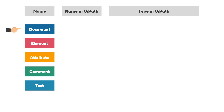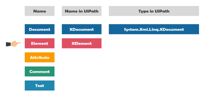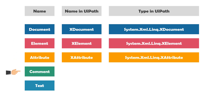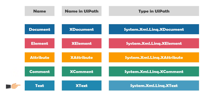Let's start with document. The document part is called xDocument in UiPath, and its type is System.Xml.Linq.xDocument. System.Xml.Linq is a namespace that contains the classes for LINQ to XML. The next one is element, called xElement. Attribute is called xAttribute, comment is called xComment, and text is called xText — each with their corresponding types.